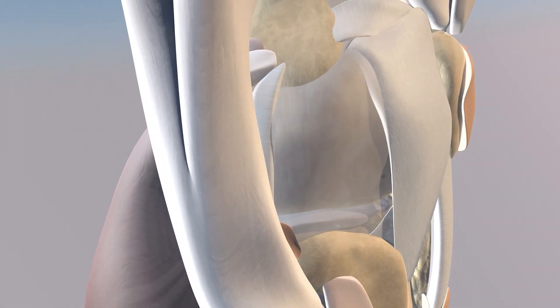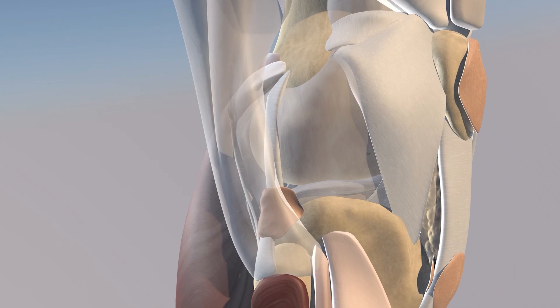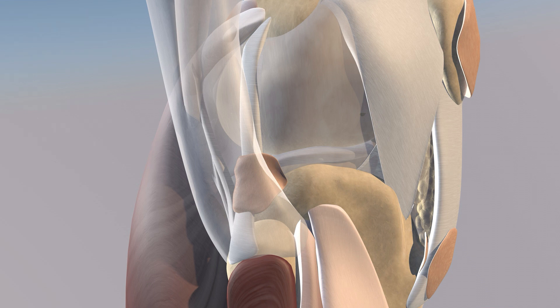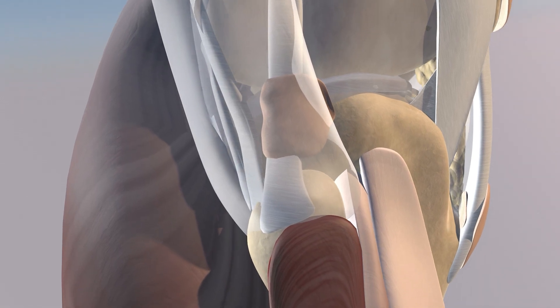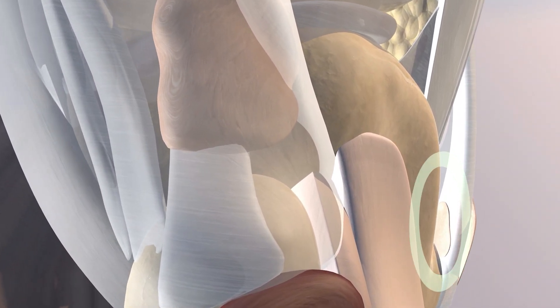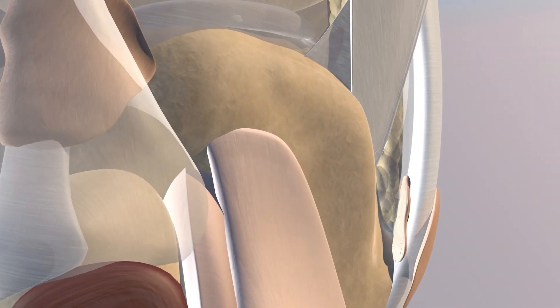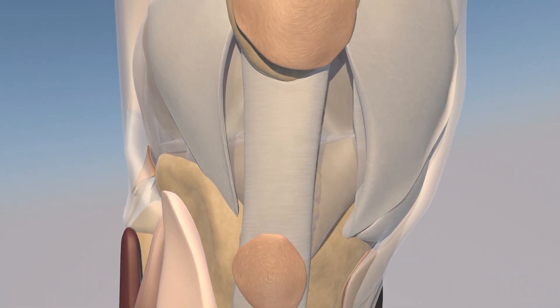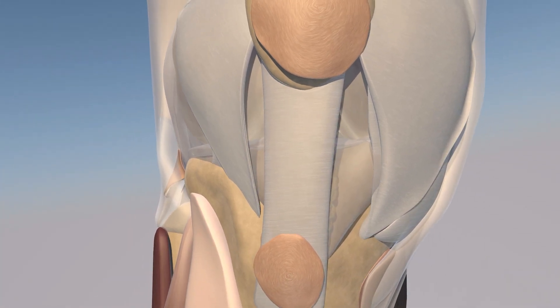Those calf muscles are translucent now, and now we're making those muscles opaque. Here we're looking at the lateral aspect of the knee where you can appreciate the biceps femoris tendon, which we just made translucent, and also the fibular collateral ligament biceps femoris bursa, which you can see draping over the lateral collateral ligament. Here we're getting a close-up view of that bursa. Now we're focusing on a deep infrapatellar bursitis — the bursa is enlarged, somewhat more lateral-sided, which we saw in this patient.